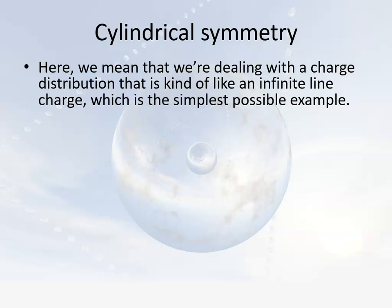Hi everybody, welcome back to another lecture about Gauss's Law in Electricity and Magnetism. In the last videos we discussed situations first involving spherical symmetry and then involving planar symmetry. In this discussion we're going to address problems involving cylindrical symmetry, where you're dealing with something analogous to an infinitely long cylinder in which the charge density does not vary at any length along the cylinder, but it might vary with respect to distance from the center of the cylinder.